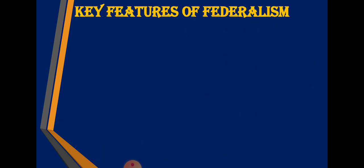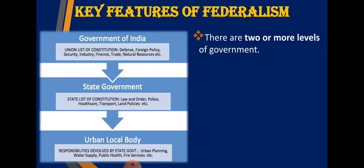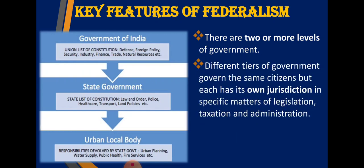There are several important features of federalism. The first and foremost feature is: there are two or more levels of government. In our country we have three levels of government - the central government, the state governments, and the urban or rural local body governments. Different tiers of government govern the same citizens but each has its own jurisdiction in specific matters of legislation, taxation, and administration.